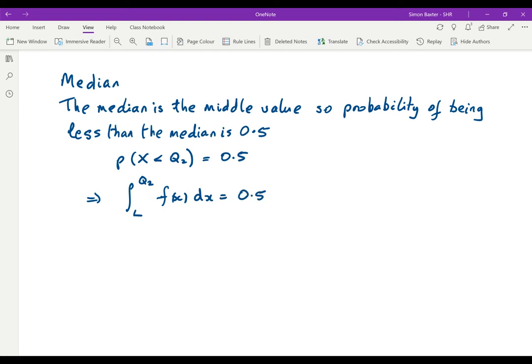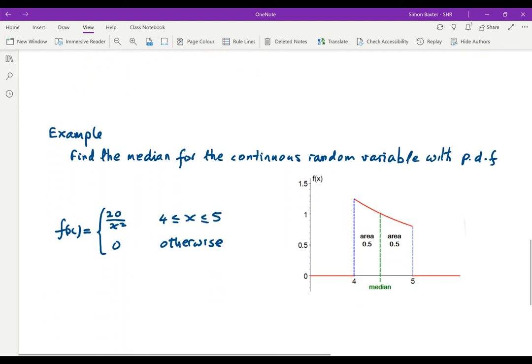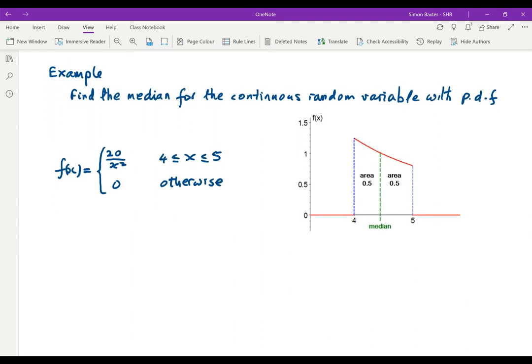Quite a simple little problem. Let's have a look at an example. Here we have a probability density function 20/x² between 4 and 5, and 0 otherwise.